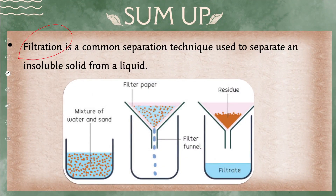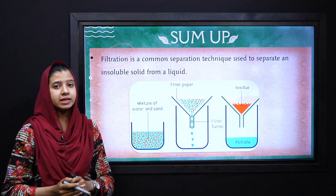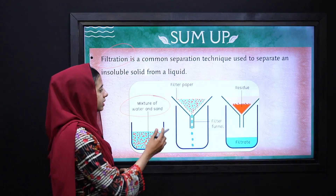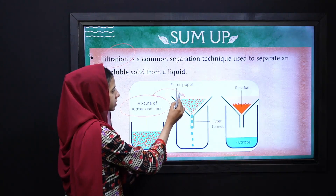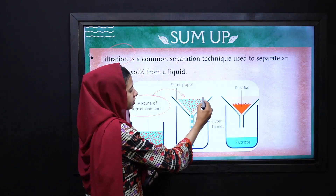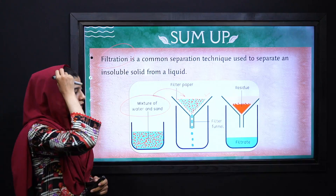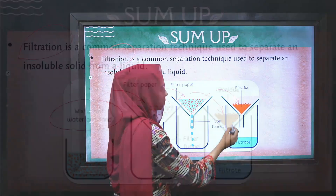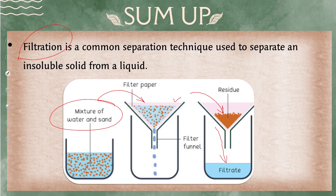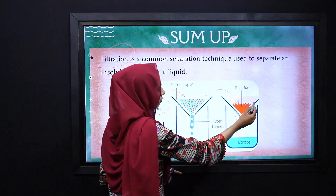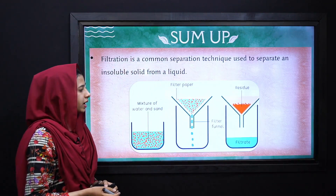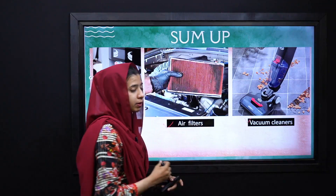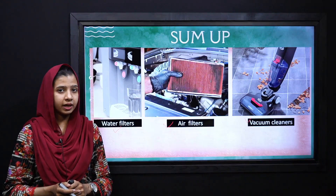To summarize today's lecture: we discussed our first technique, which is filtration. Any mixture that contains insoluble particles present in a liquid solution can be separated using filtration. In this technique, we use filter paper — the insoluble particles collect on the filter paper as residue, and the liquid solvent collects in the beaker below as filtrate. Applications include water filter units, air filters, and vacuum cleaners.